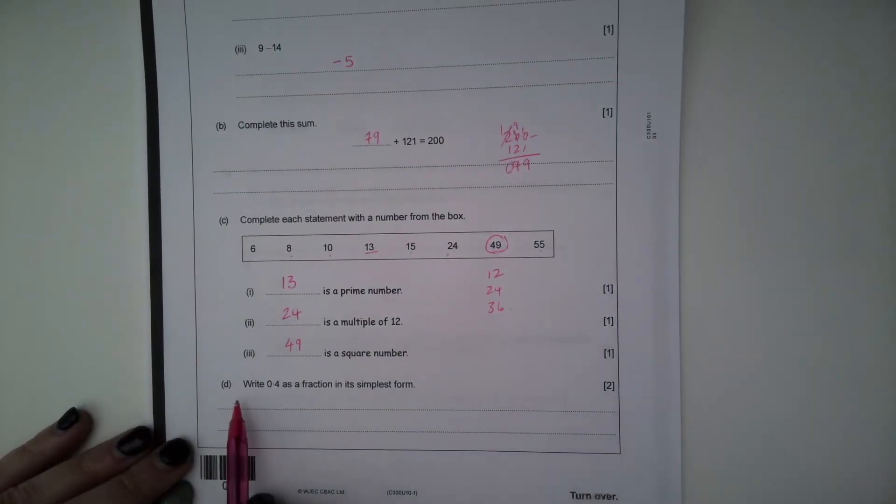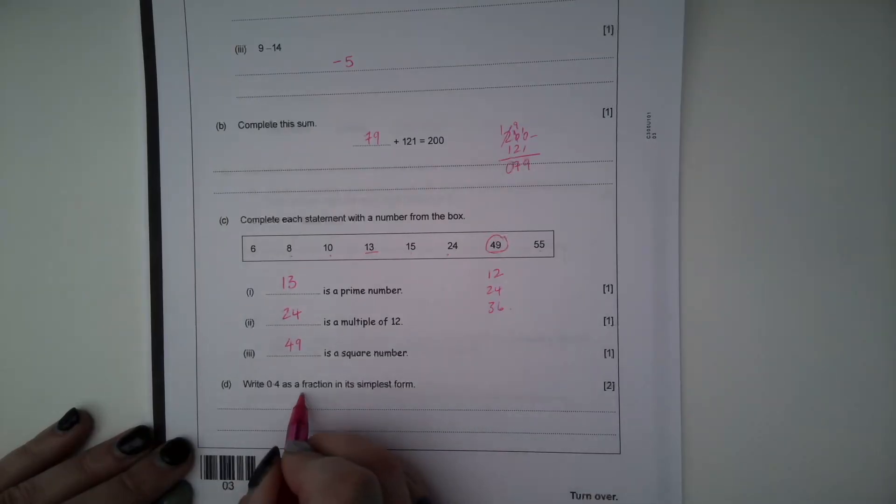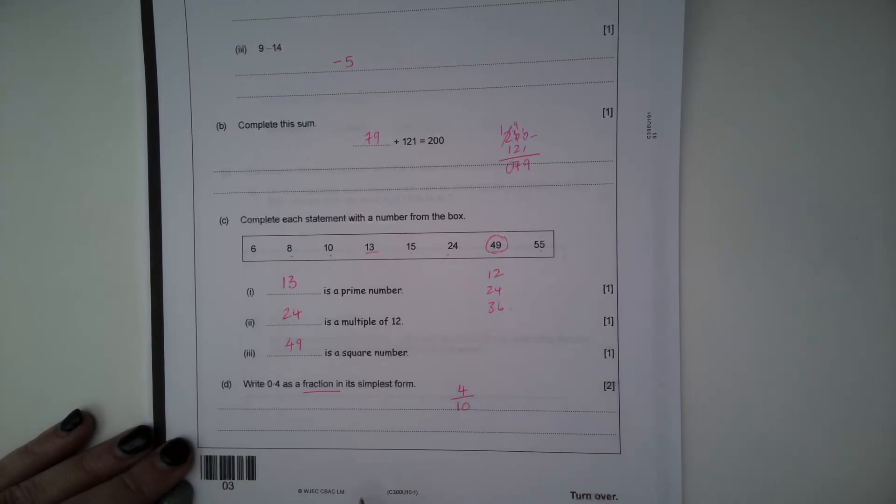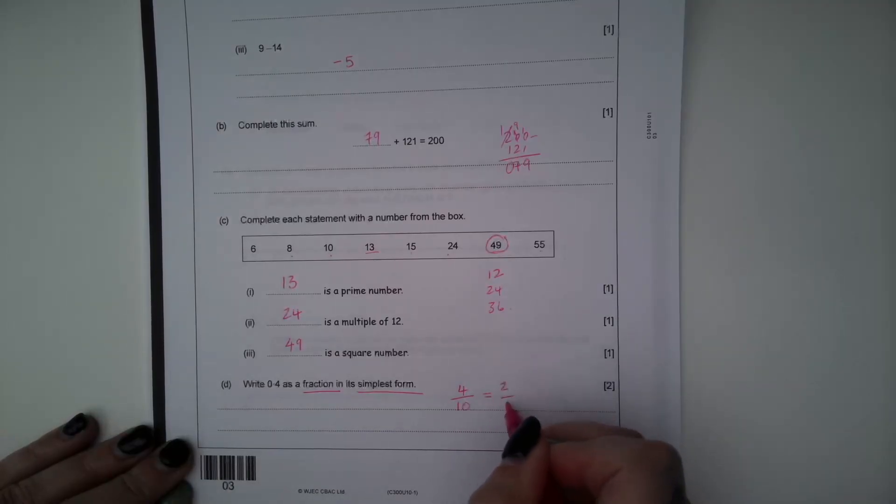Part D, write 0.4 as a fraction in its simplest form. So currently we're a decimal. To write 0.4 as a fraction, I'm going to write it as 4 over 10 initially. We have one decimal place. It's in the tenths column, so that's 4 tenths. Now we need to make sure it's in our simplest form. Well I can divide the numerator and the denominator by 2, so that becomes 2 fifths in its simplest form.